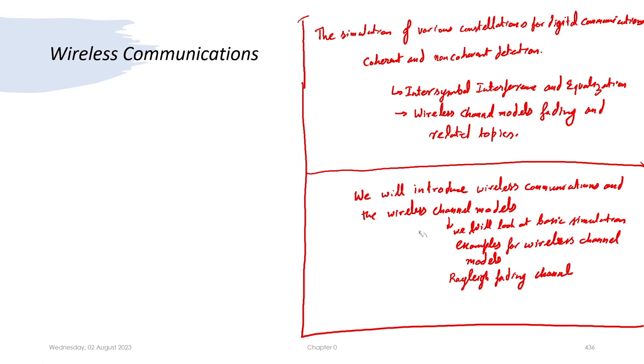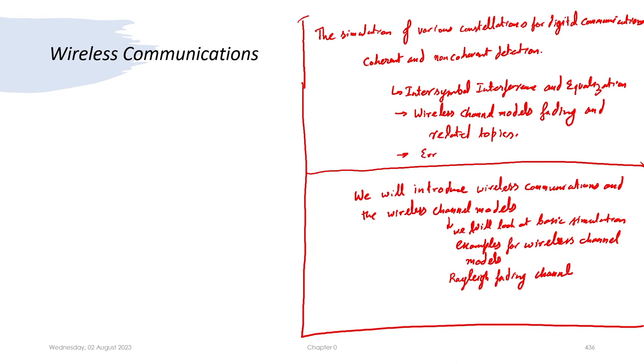Following this, hopefully we will be able to conceive another course on modeling and simulation of wireless communication systems, which will cover intersymbol interference, fading channels, and possibly coding — because coding is another aspect of modern communication systems we have till now totally ignored, and it forms the very backbone of all communication systems. So error control coding, intersymbol interference, wireless channel models, and decoding are all delegated to a separate course.